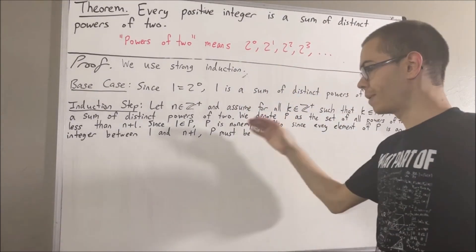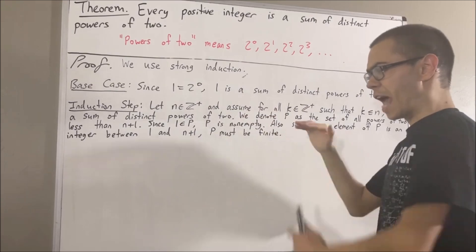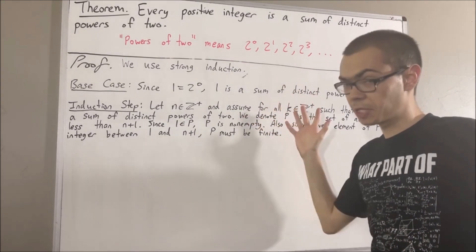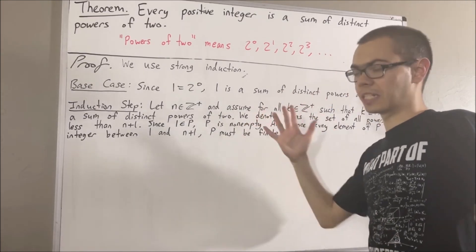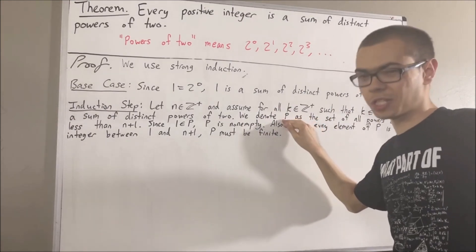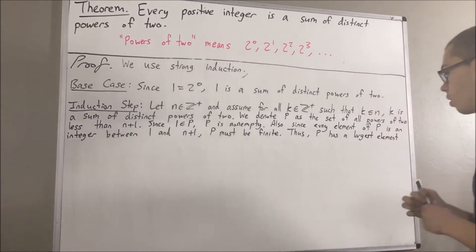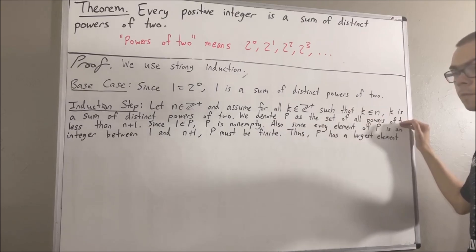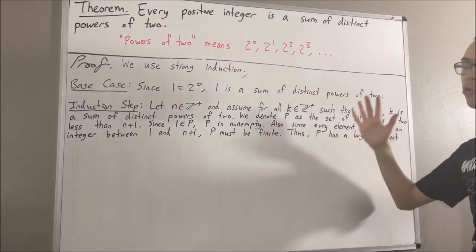So p is non-empty and finite. Now, every non-empty finite set of real numbers has a largest element, so p must have a largest element. Since every element of p is a power of two, we're going to say that the largest element of p is two to the power of s.